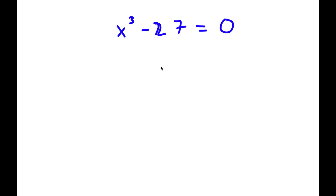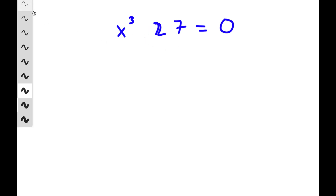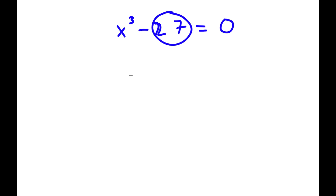In this problem, I have x to the power of 3 minus 27 is equal to 0. To solve this, I'm going to first rewrite 27 as 3 to the power of 3. So now I have x to the power of 3 minus 3 to the power of 3 is equal to 0.